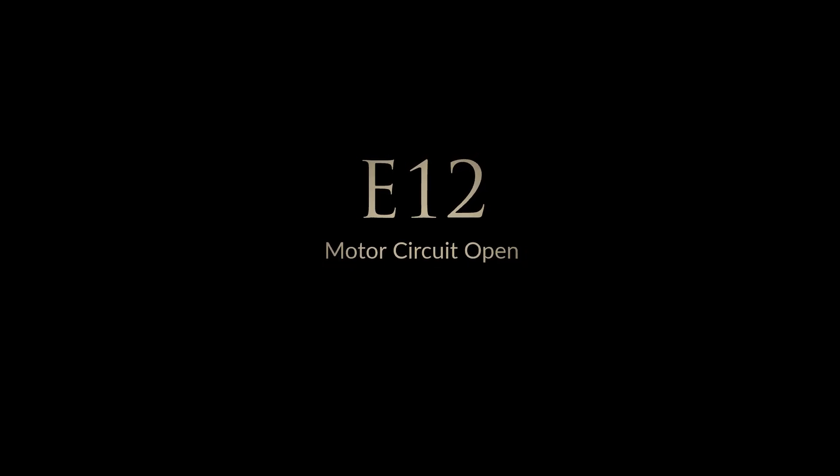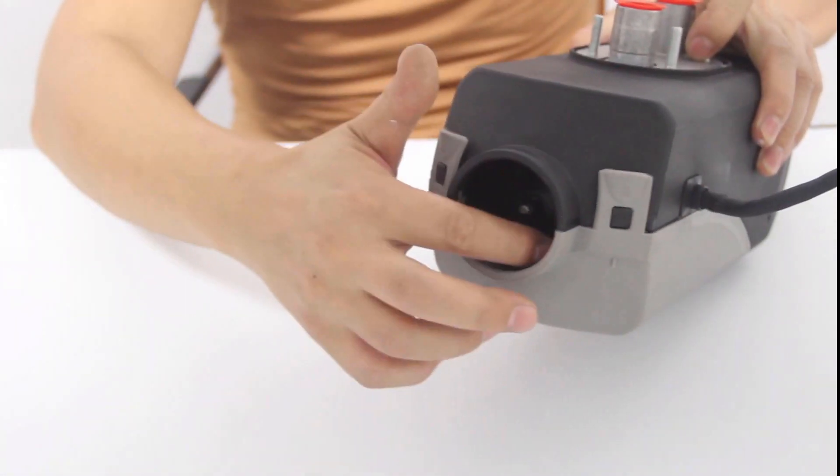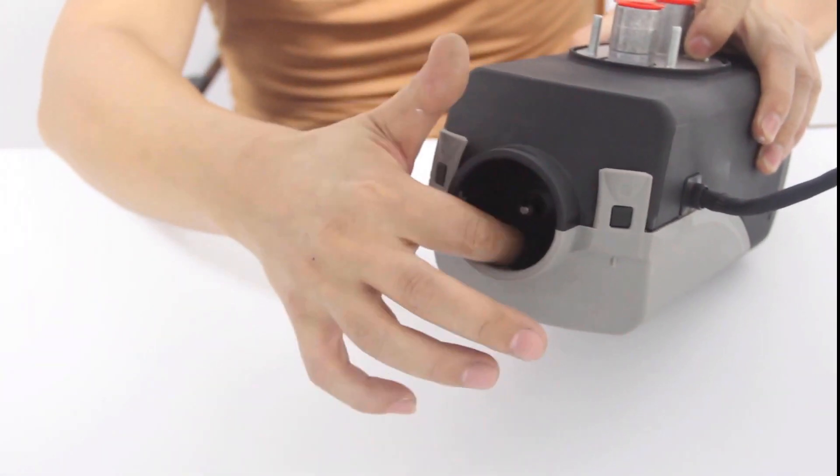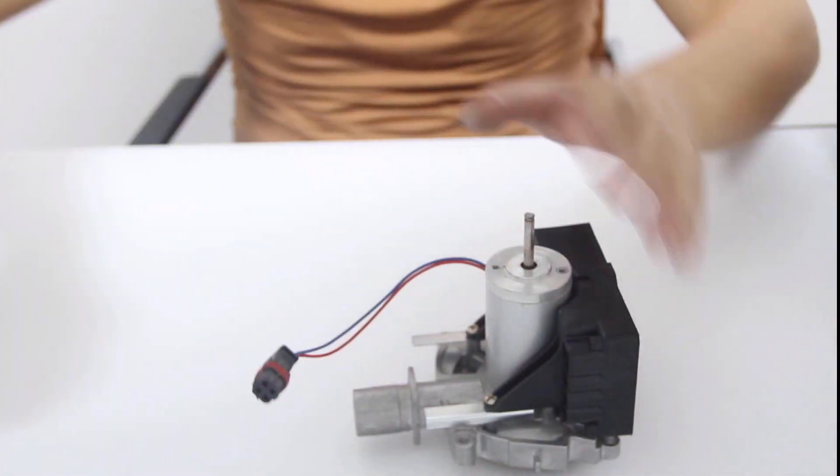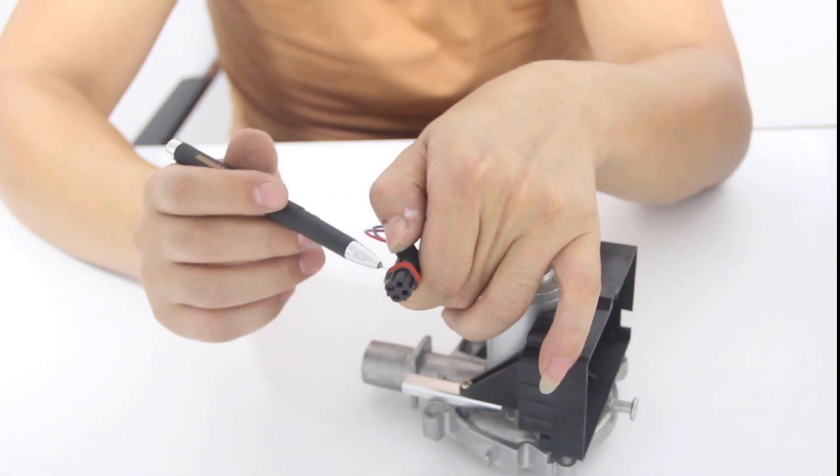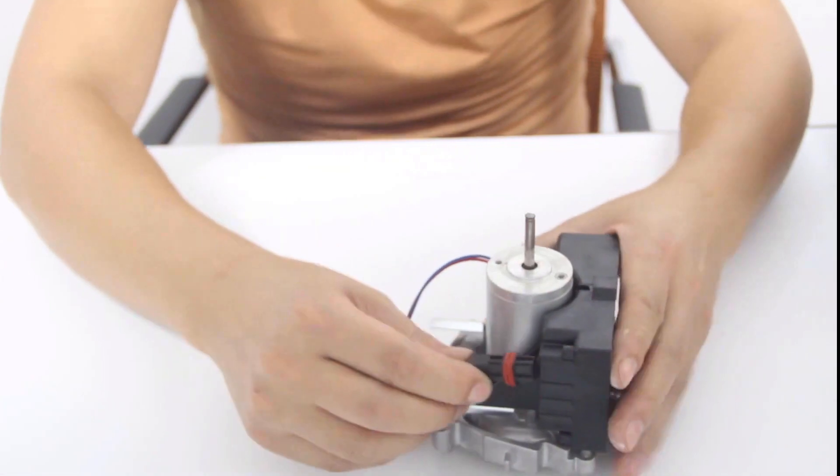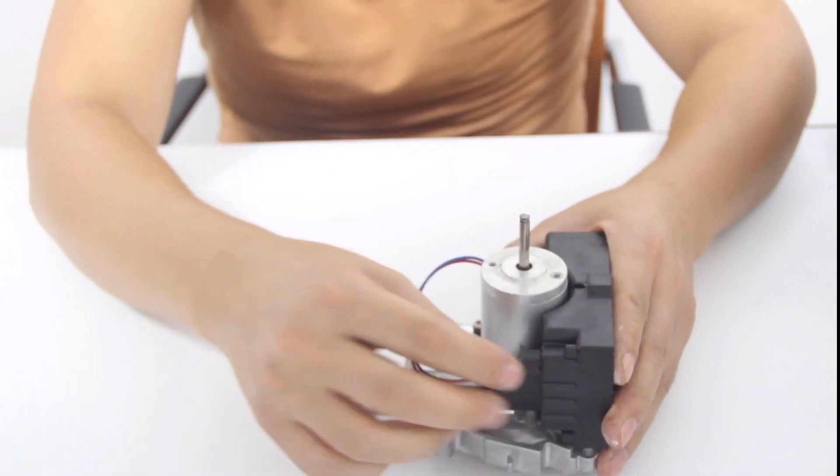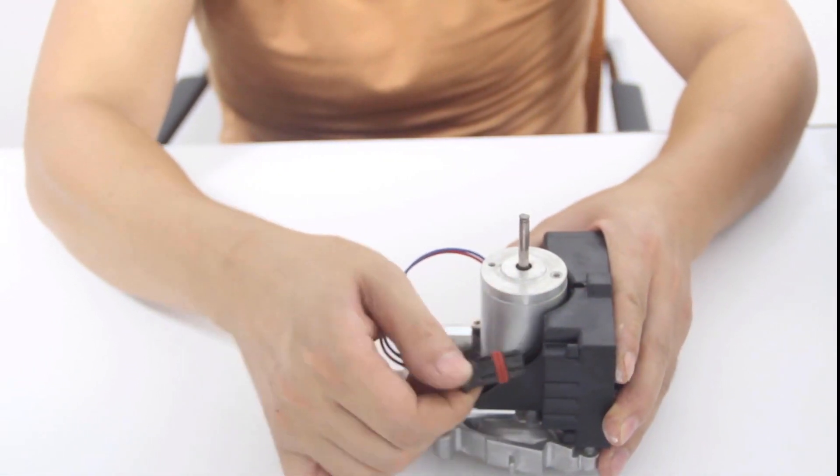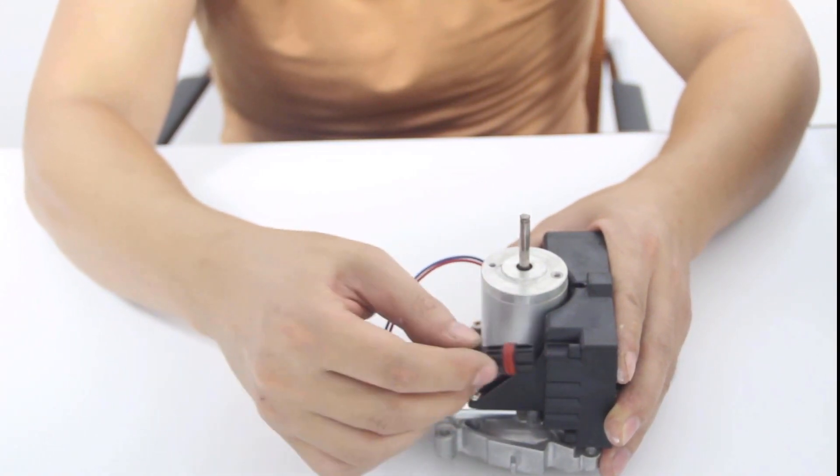Error code 12, motor circuit open. To address error 12, we must examine four specific areas. First, inspect whether the blower fan is rubbing or stuck on the outer housing of the unit. Secondly, examine the orientation of your connections and plugs to ensure they are properly and securely connected. Thirdly, examine the motor's RPM sensor on the motherboard. Confirm that the solder points are in good condition and ensure it is installed correctly within the motherboard housing.